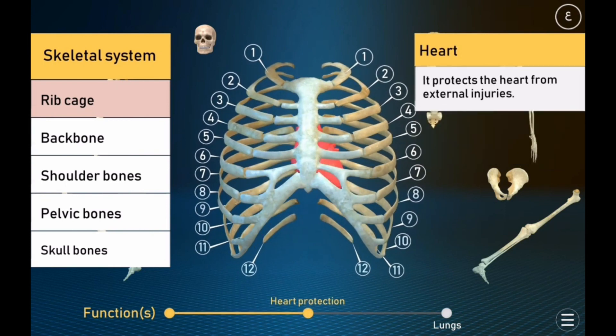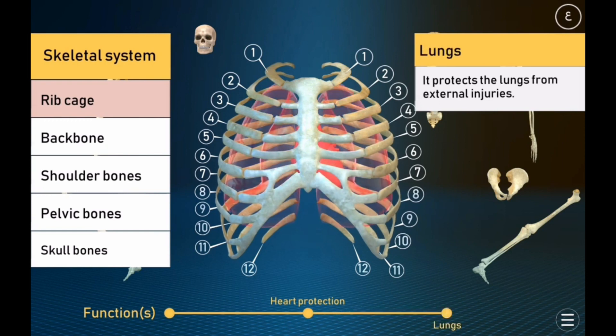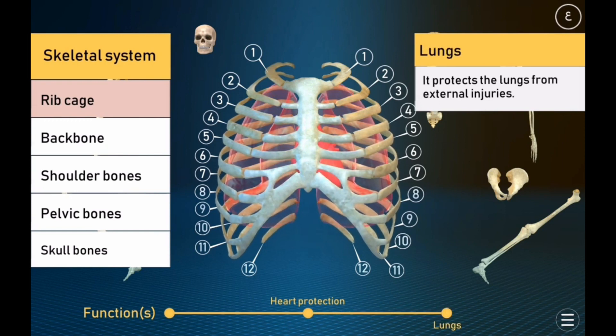The rib cage protects the heart from external injuries. It also protects the lungs from external injuries.